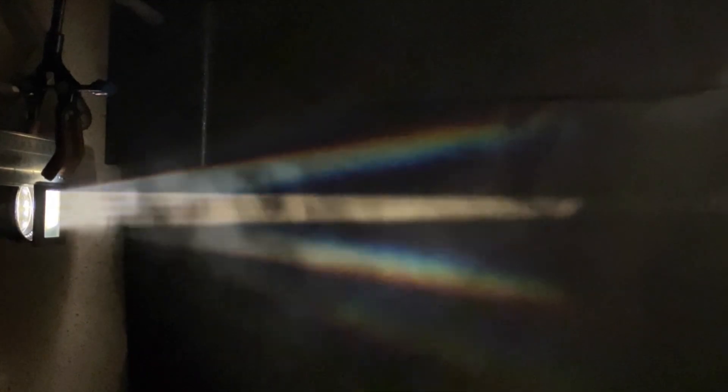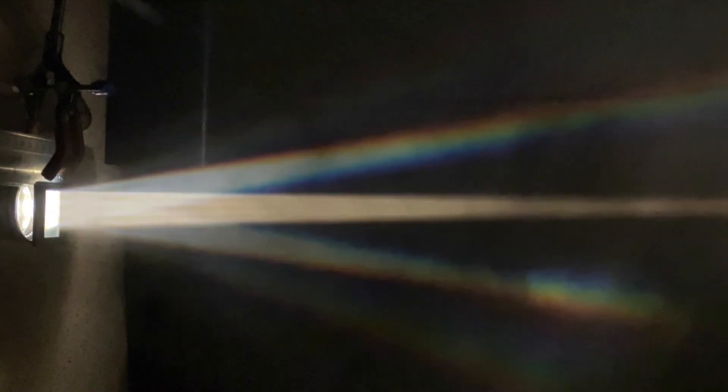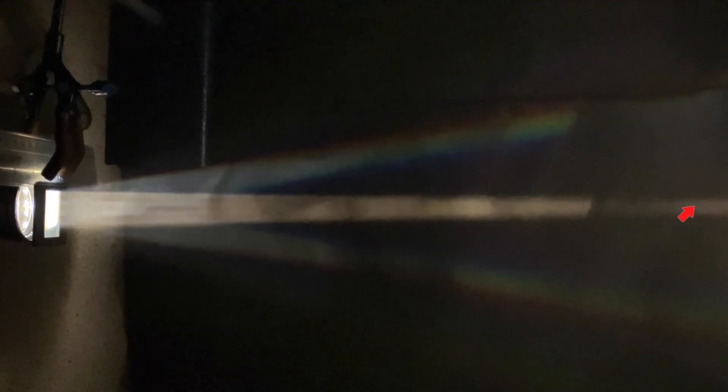Well, each of these slits acts as a source of light, and all these different sources of light interfere with each other. So first of all, let's answer the question as to why we get a white beam down the middle, the zero-order beam.